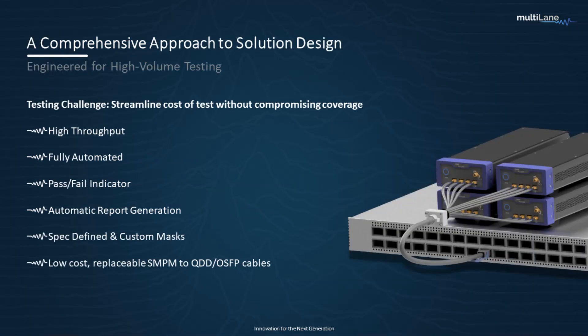The specifics of the 224 gig per lane generation are still being worked out. We all know the standards are still not finalized. But our real skill is in moving with and anticipating our partners' needs in testing terms. From our extensive work in test and measurement, a few points keep coming from our partners: streamlining the cost of test without compromising on test coverage is the name of the game.